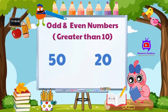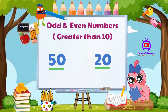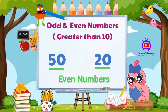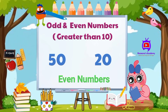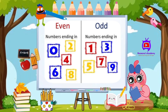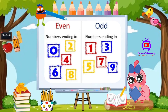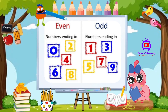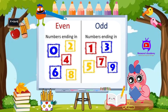Now look at 50 and 20 — they are both tens numbers. Since 10 is an even number, 50 and 20 are also even. So if a number ends with zero, two, four, six, or eight, it is an even number. If a number ends with one, three, five, seven, or nine, it is an odd number.